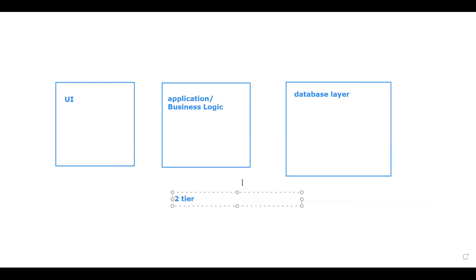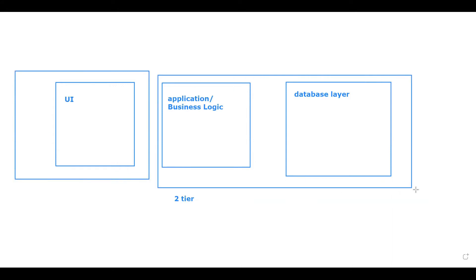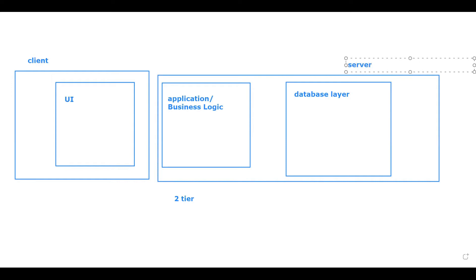In two-tier architecture, we have a concept of client and server. The server is divided into two parts: a database server and a web server, which is the application layer. Whenever a client requests something, it goes to the server.